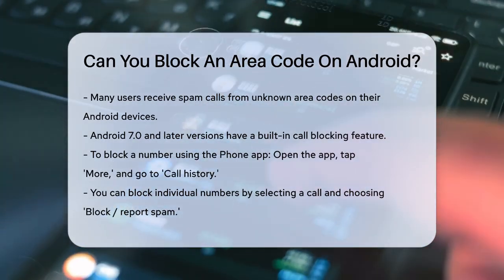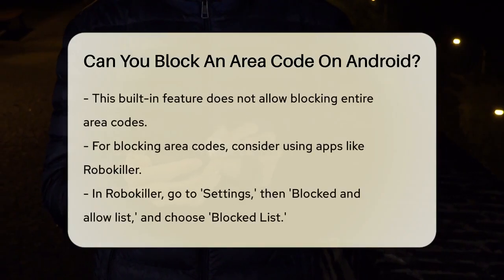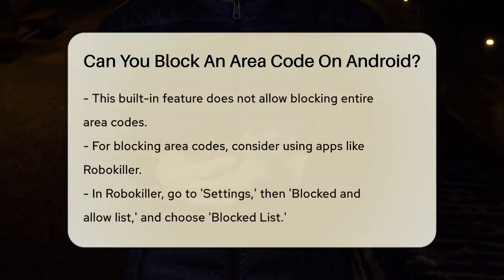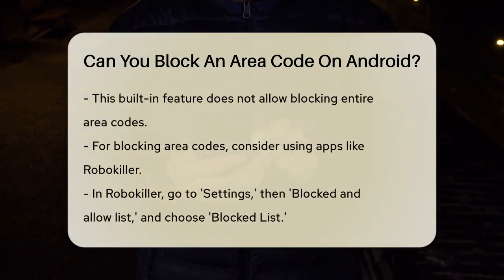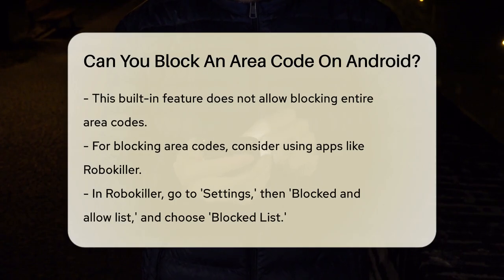Here's how you can use it: open your phone app, tap on More, then go to Call History. From here, you can tap on a call from the number you want to block and select Block or Report Spam. However, this method blocks individual numbers rather than entire area codes.